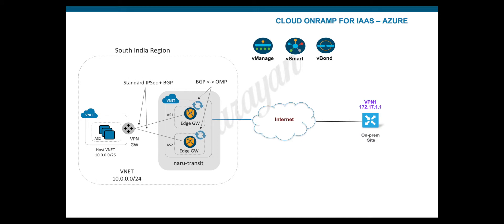This is the topology we will use for this demo. I have an instance running in a host v-net in Azure's South India region and an edge in a branch. Using Cloud onRamp we will extend the SD-WAN connectivity from the branch to the Azure cloud instance. So let's begin.